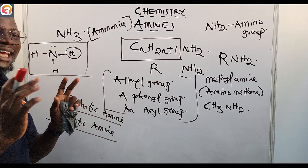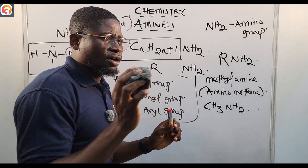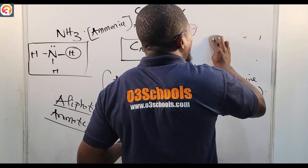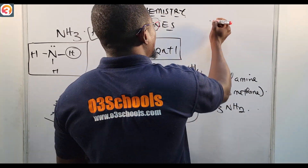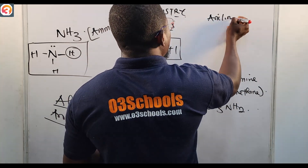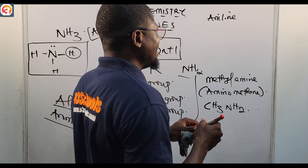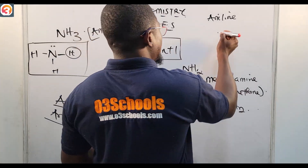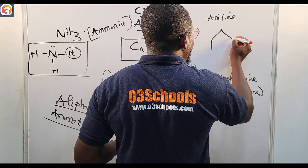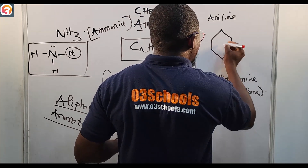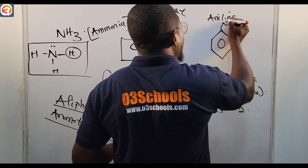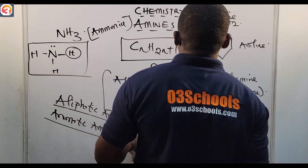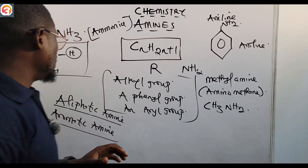An example of an aromatic amine: when we studied derivatives of benzene, we talked about aniline, also called phenylamine. The benzene ring has an -NH₂ group attached — that structure is called aniline, and it is our example of an aromatic amine.